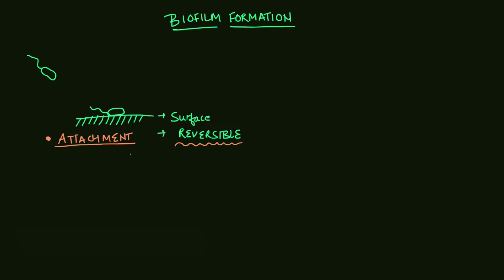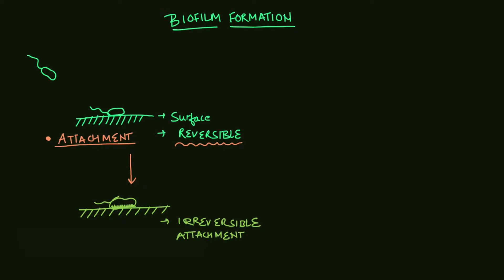In the second stage, the cell will firmly and tightly attach to the surface. This stage is the irreversible stage, where the cell is no longer able to detach from the surface. This is also part of the attachment stage, so you have two different sub-stages within the attachment stage.